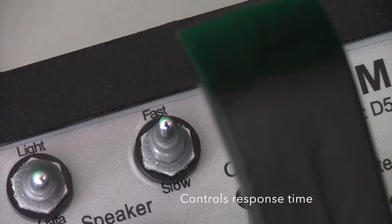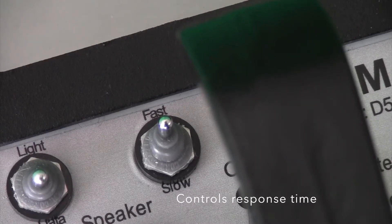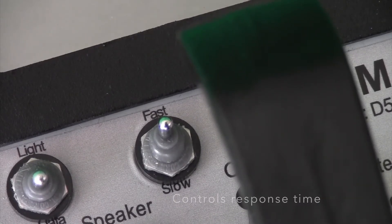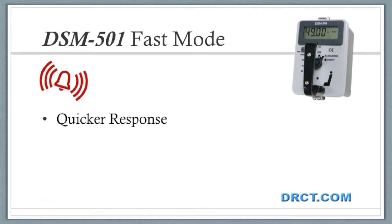Other controls include the fast-slow switch, which controls the response time. Operating in the fast mode will yield a quicker response, but a less accurate reading. Typically use the fast setting in the field. The time constant for this mode is 20 seconds.